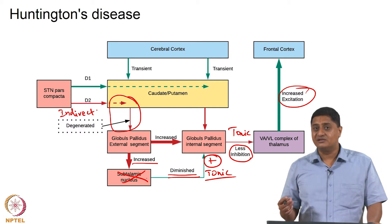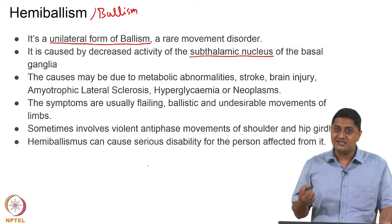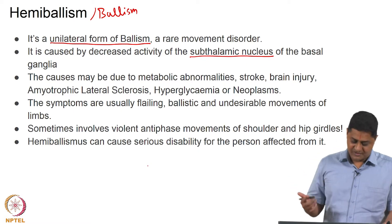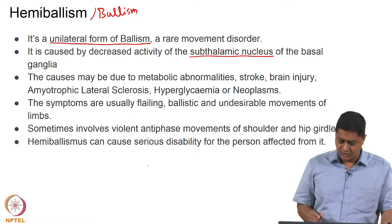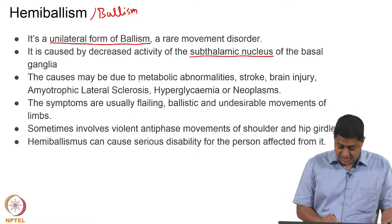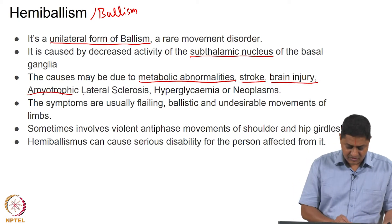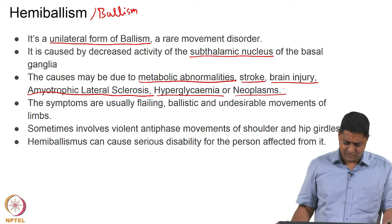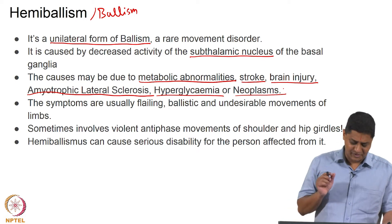If the subthalamic nucleus is knocked out, the output of the GPI is reduced — and since GPI output is inhibitory, hemiballism leads to unwanted movements. The exact reasons why subthalamic nucleus neurons are knocked out may include metabolic abnormalities, stroke, brain injury, ALS, hyperglycemia, or neoplasm — several causes could lead to selective degeneration or death of neurons in the subthalamic nucleus.